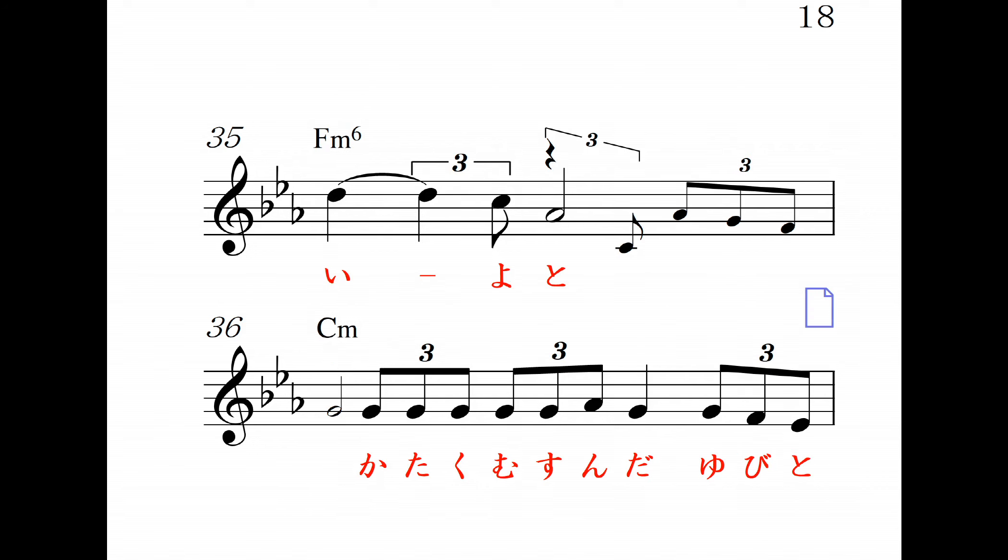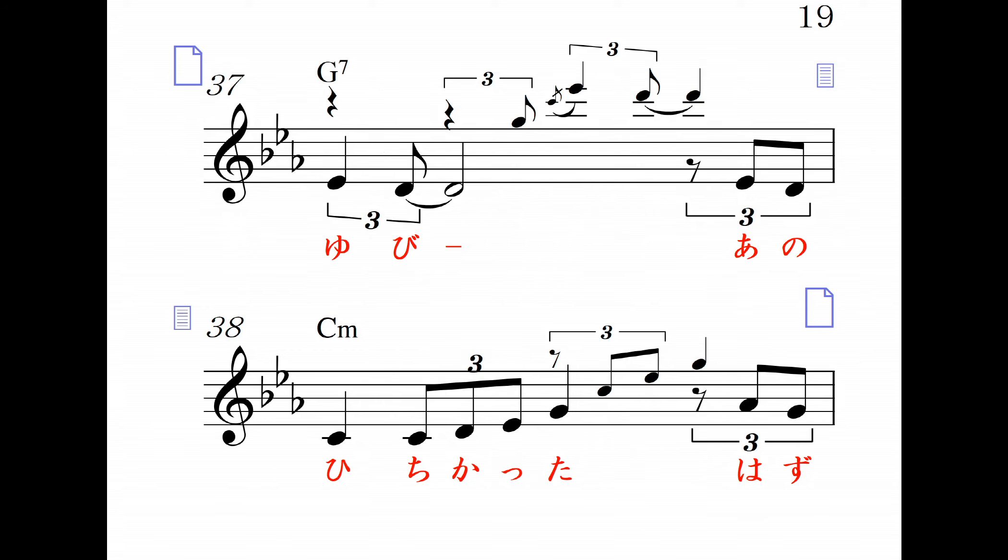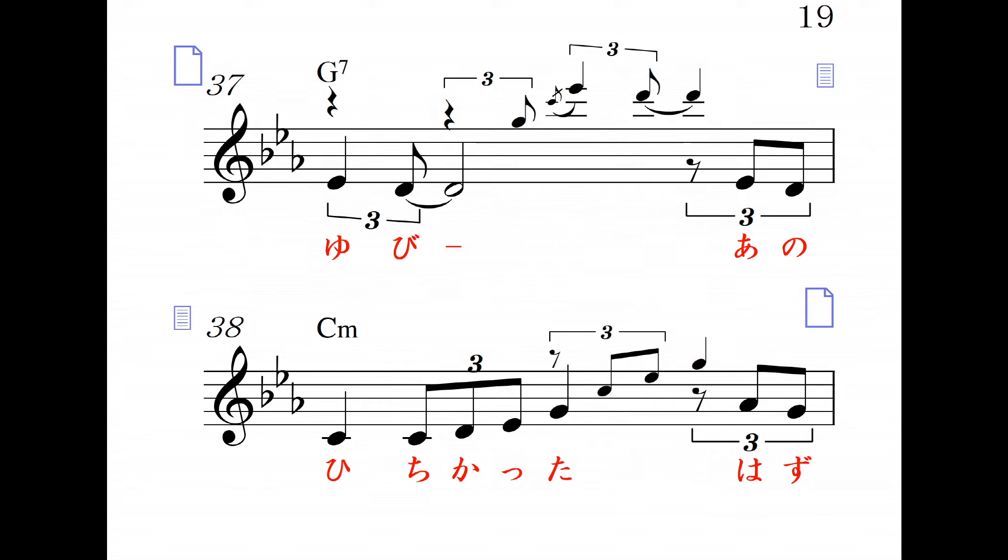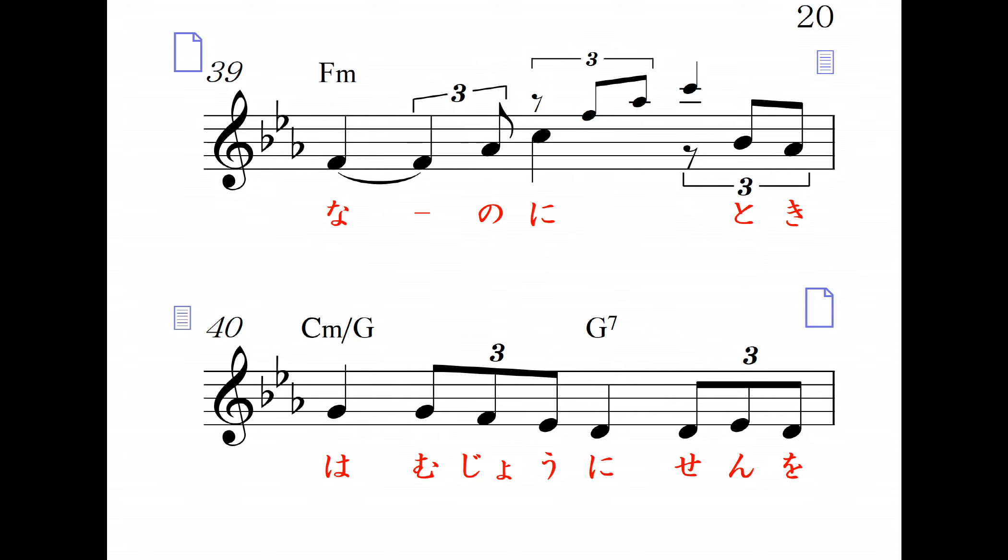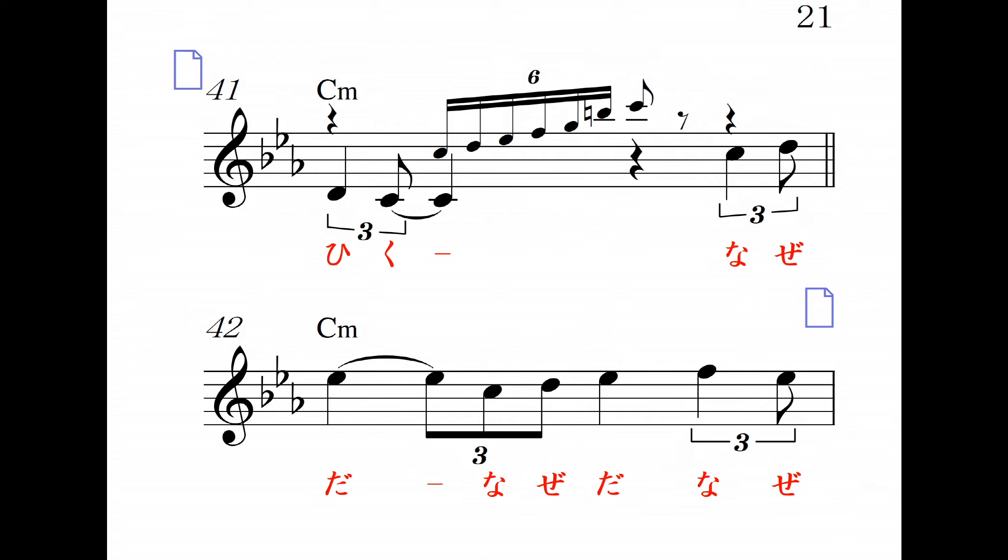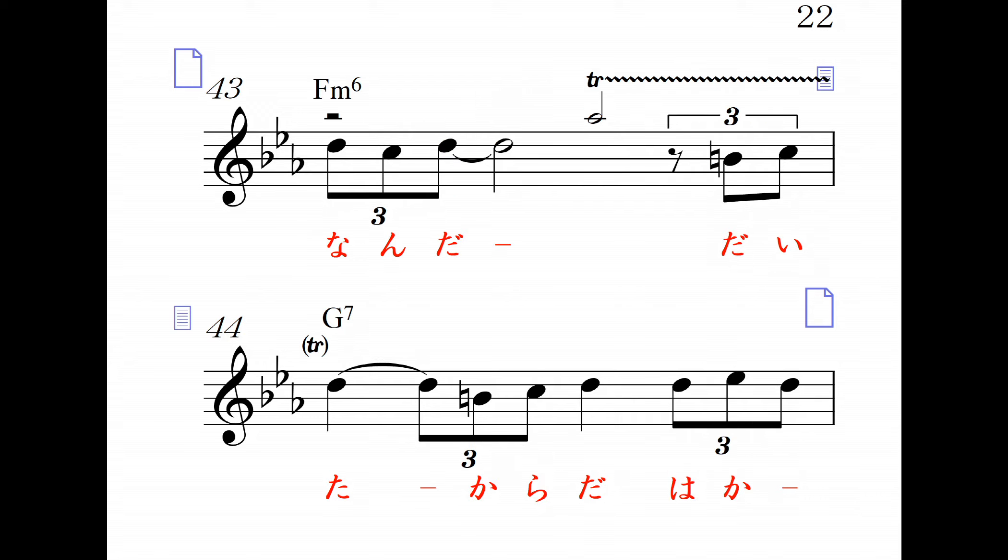決して一人にしないよと 固く結んだ指と指あの日 誓ったはずなのに 時は無情に線を引く 時は無情に線を引く なぜだ なぜだ なぜなんだ 抱いた体